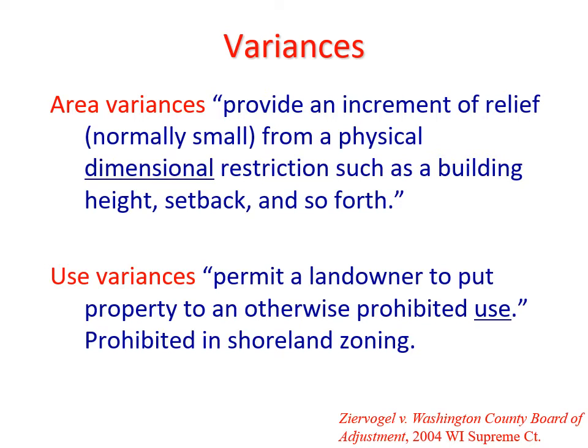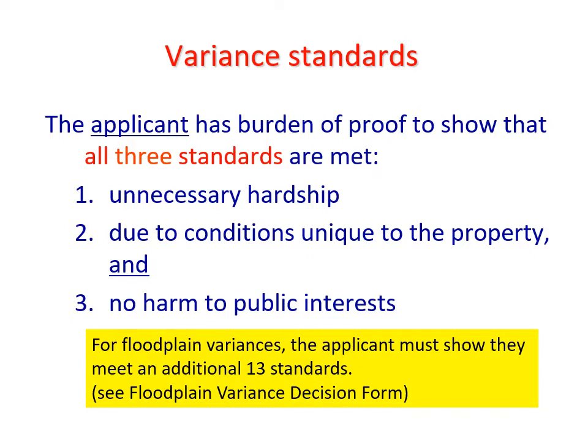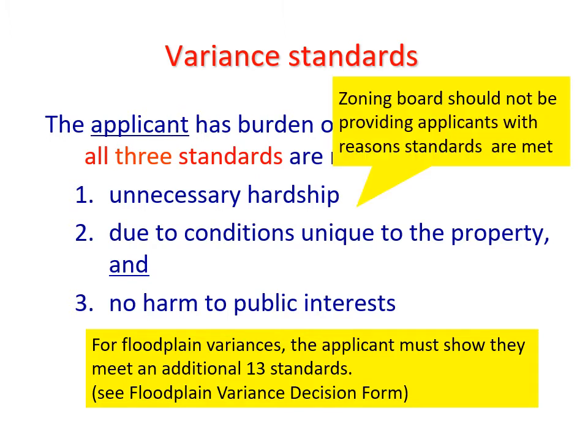Use variances are prohibited in shoreland zoning. For all variances, the applicant has the burden of proof to show that all three tests are met: unnecessary hardship, due to conditions unique to the property, and no harm to the public interests. For variances to a floodplain ordinance, the applicant must show they meet an additional 13 standards. The zoning board should not be providing applicants with the reasons the standards are met — that's the job of the applicant.